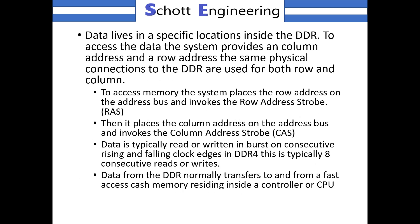Data lives in a specific location inside the DDR. To access the data, the system provides a column address and a row address. The same physical connections to the DDR are used for both row and column. To access the memory, the system places the row address on the address bus and invokes the row address strobe, then it places the column address on the address bus and invokes the column address strobe.